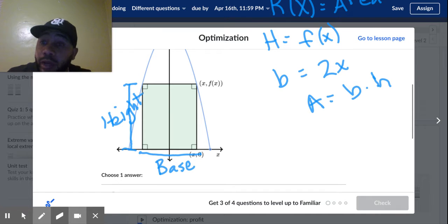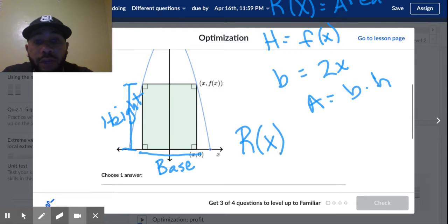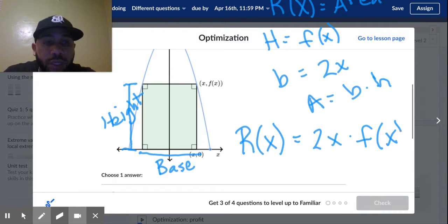Now we can make an equation for R(x). And now we can make an equation for R(x) though, because R(x) is going to be 2x times f(x), because it was base times height.